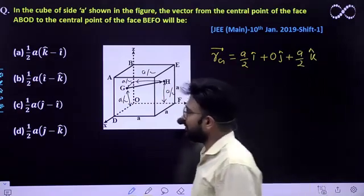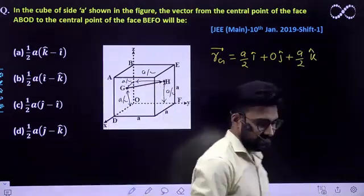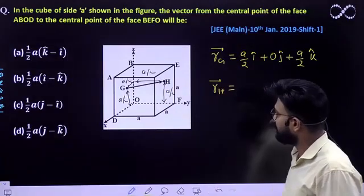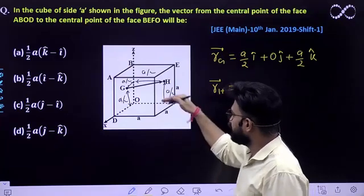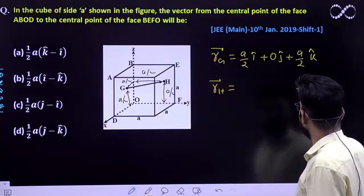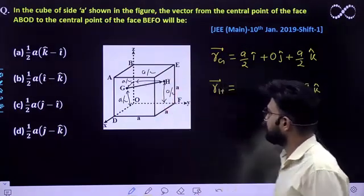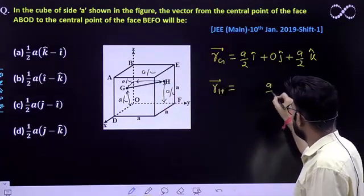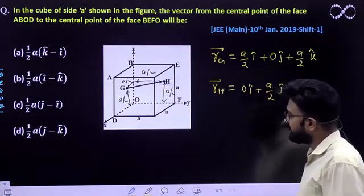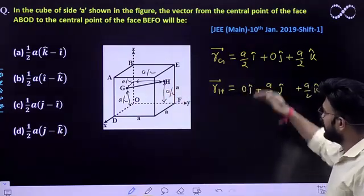Now let's quickly find the position vector of H. What will H's position vector be? See, it's above the z-axis, that is a by 2, so you can write a by 2 k cap here. And on the y-axis how far is it? a by 2. So this would be a by 2 j cap plus zero i cap. It has no component along the x-axis.